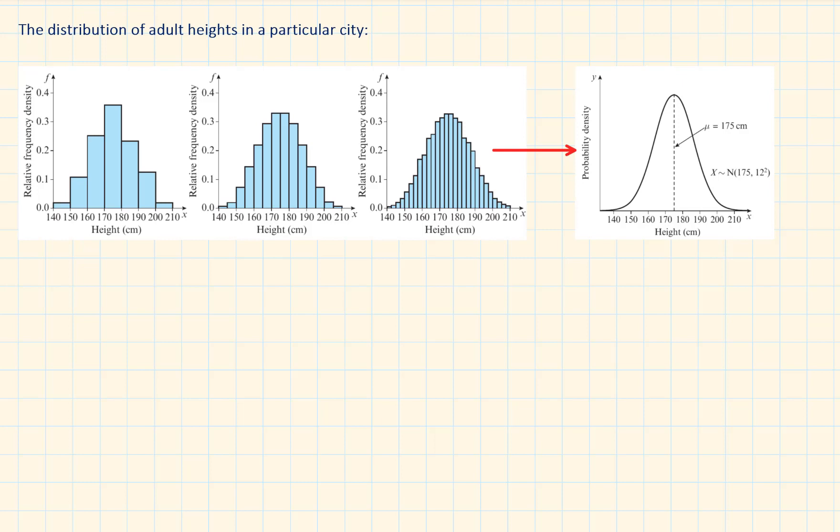These histograms show the distribution of adult heights in a particular city. As the class width reduces, the distribution gets smoother, so it approaches more and more the bell-shaped curve.